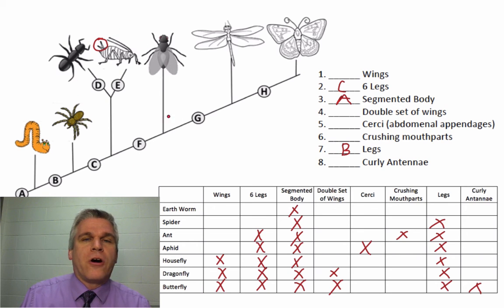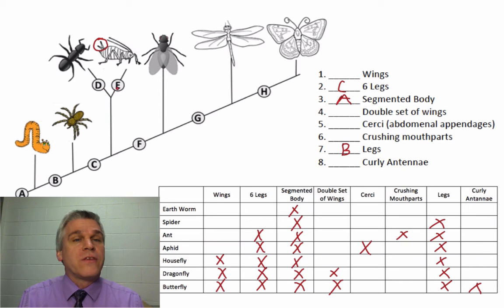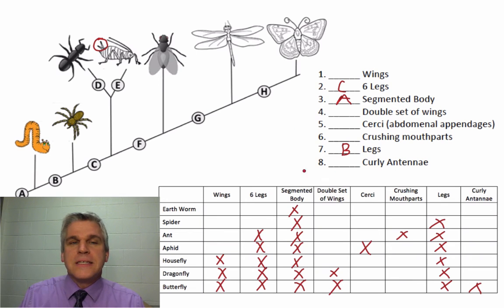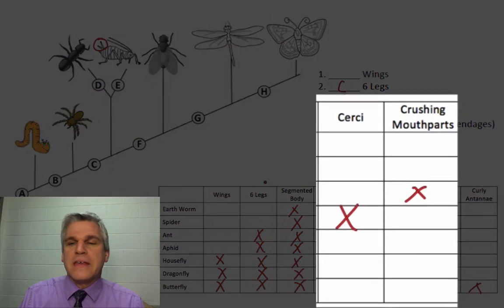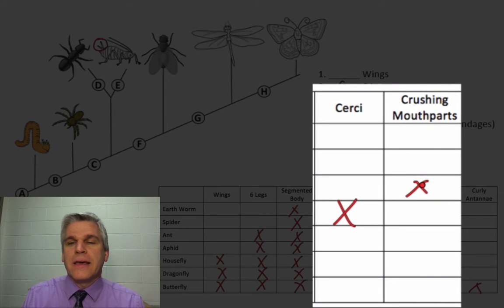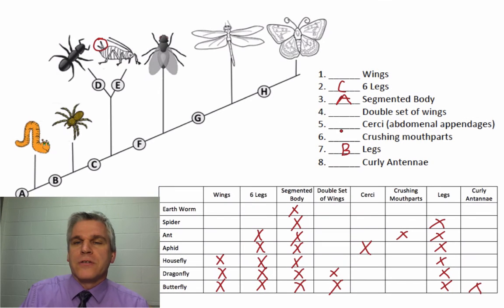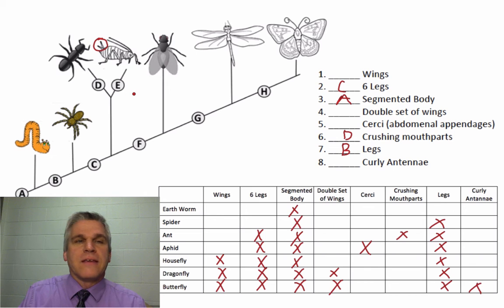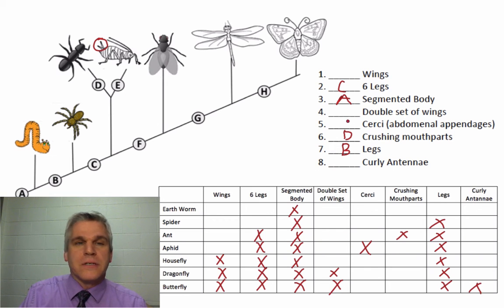These animals all have things in common, but there's one thing that the ant has and one thing that the aphid has that the others don't. Looking at D — what's one thing that the ant has that nobody else has? That's the crushing mouth parts, so we're going to label that as D. And E — one thing that the aphid has that nobody else has — is the circe. So that is E.